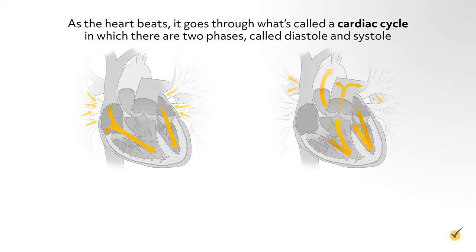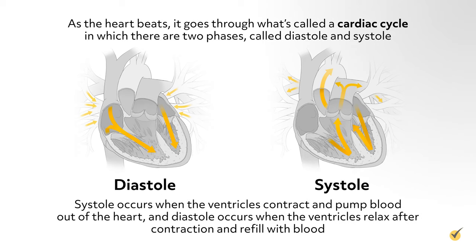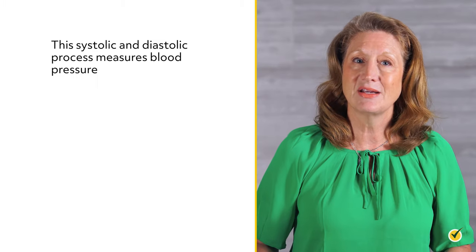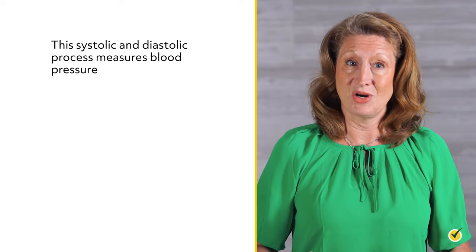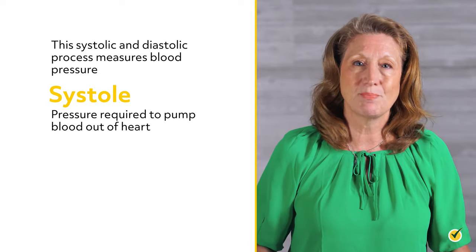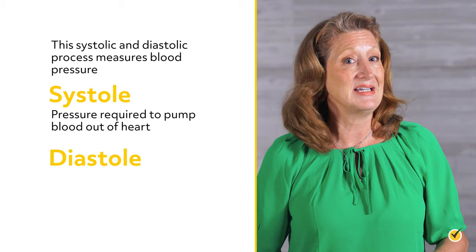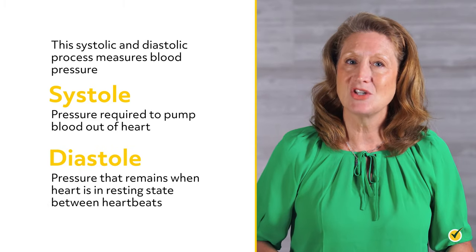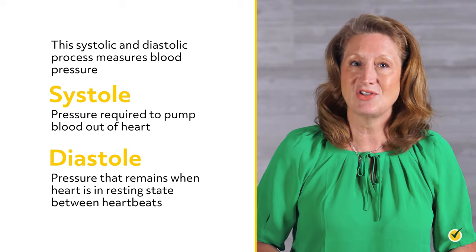As the heart beats, it goes through what's called a cardiac cycle, in which there are two phases called the diastole and systole. Systole occurs when the ventricles contract and pump blood out of the heart, and diastole occurs when the ventricles relax after contraction and refill with blood. This systolic and diastolic process measures blood pressure. Systole, or the top number, is the pressure required to pump blood out of the heart, and diastole, the bottom number, is the pressure that remains when the heart is in a resting state between heartbeats.